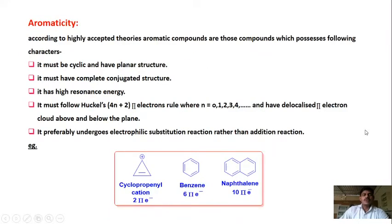Now what is aromaticity? According to the highly accepted theory, aromatic compounds are those which possess the following characteristics. First, it must be cyclic and it must have a planar structure — only then can aromaticity be obeyed by the structure.